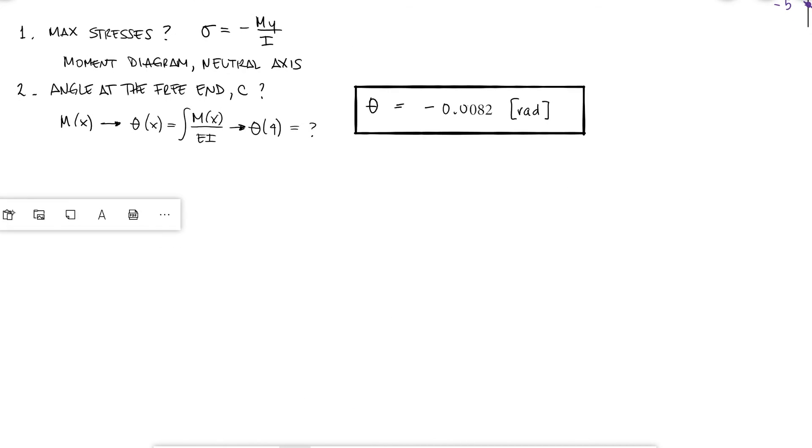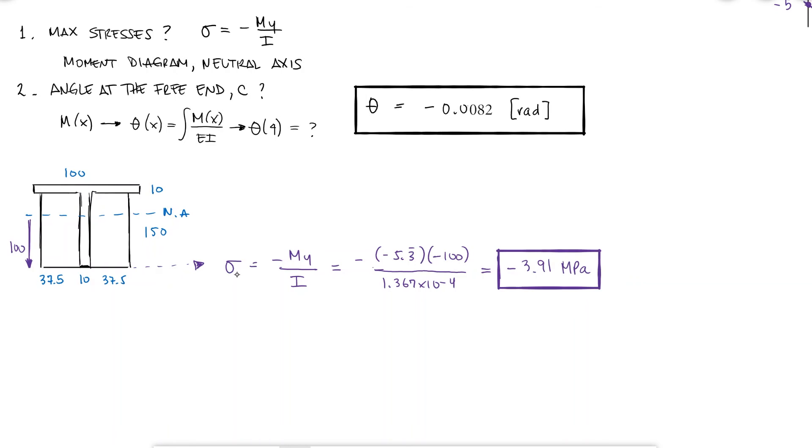we can find that the maximum stress at the bottom surface which is made of wood is equal to the maximum moment I found when drawing the bending moment diagram times the distance from the neutral axis to the bottom divided by the second moment of area. Notice that both the moment and the distance y are negative. This results in a negative and therefore compressive stress of 3.91 MPa.